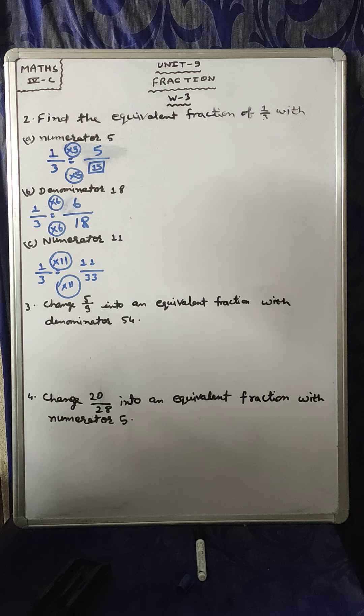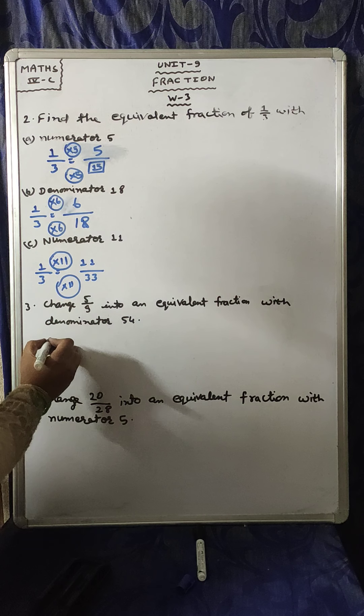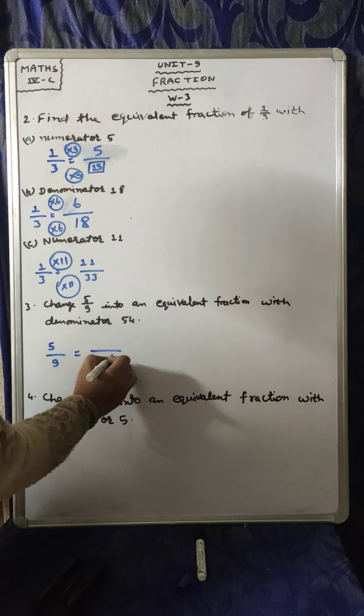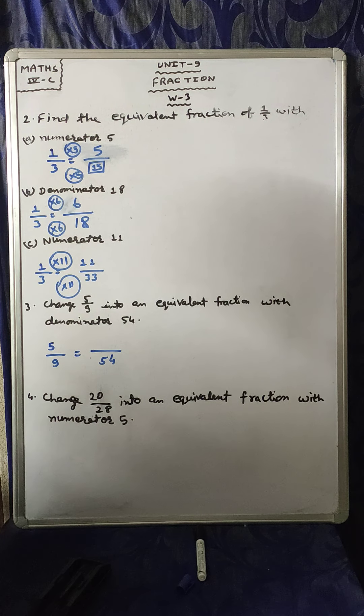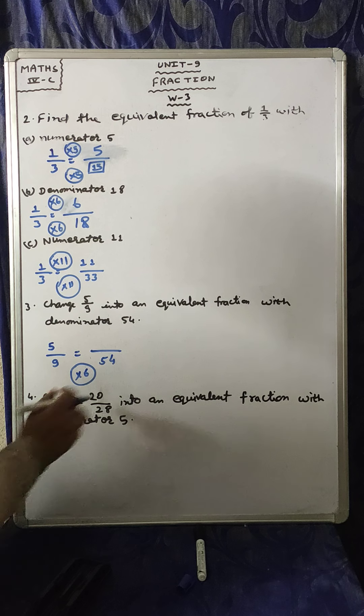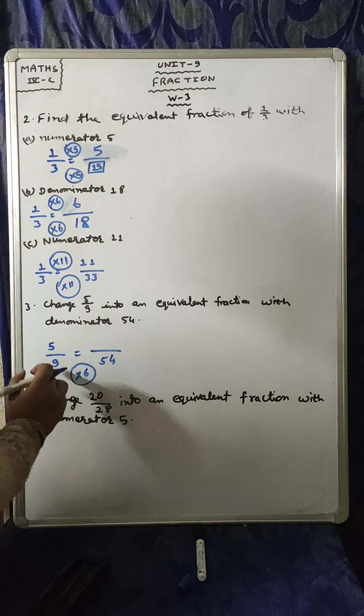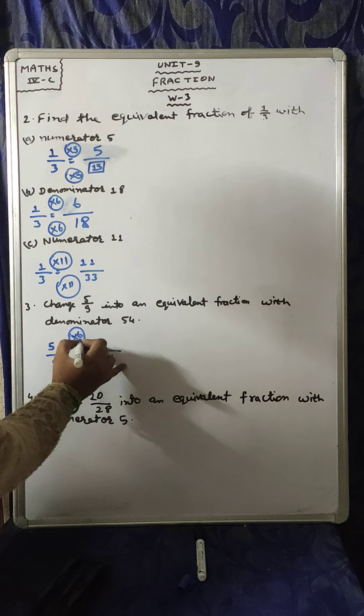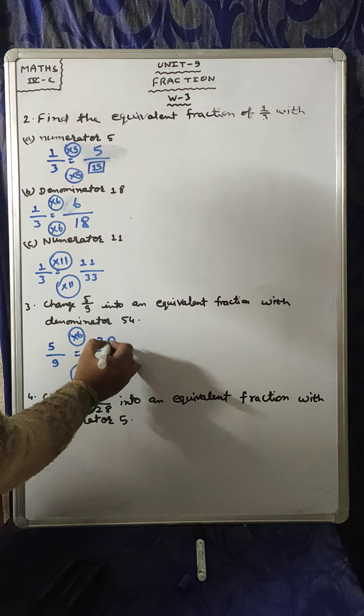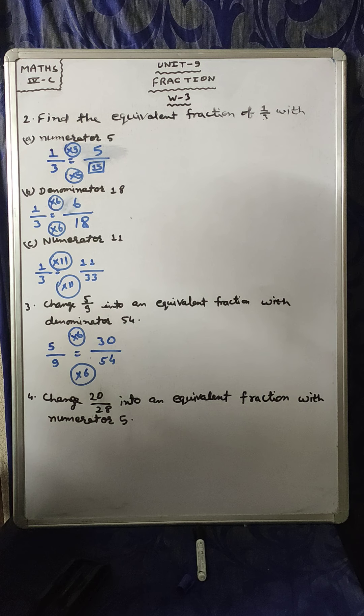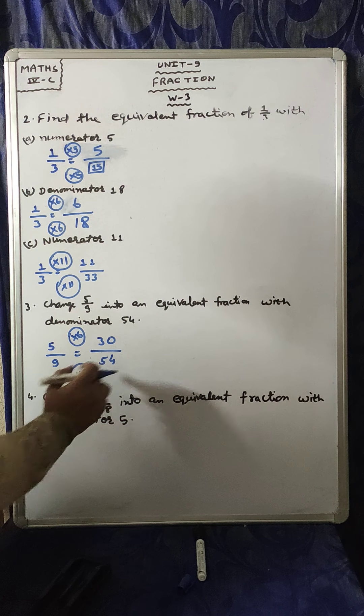Next, coming to question number 3. Change 5/9 into an equivalent fraction with denominator 54. First, we have to find out the numerator to get an equivalent fraction. 9 times 6 is 54, so 54 is 6 times 9. 5 times 6 is 30, so 30 is 6 times 5. We have to multiply by the same digit to get an equivalent fraction. 5 times 6 is 30, and 9 times 6 is 54.